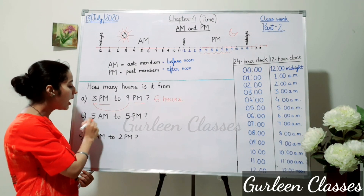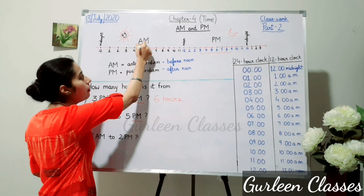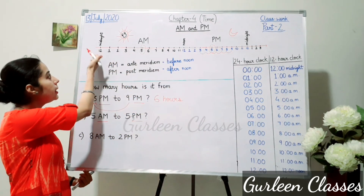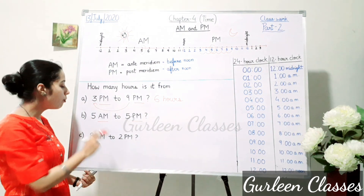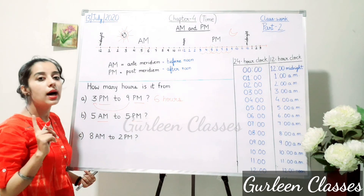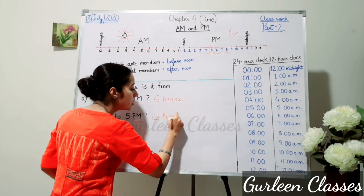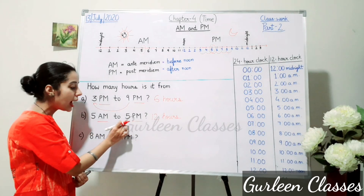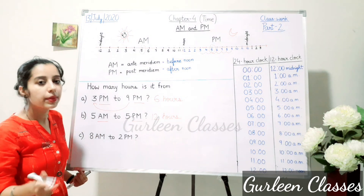Next part: from 5 AM to 5 PM. This is similar to going from midnight to noon, so we say 12 hours. Whenever AM and PM are written and both numbers are the same, you simply write 12 hours.